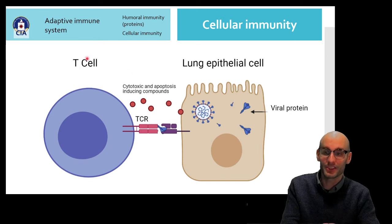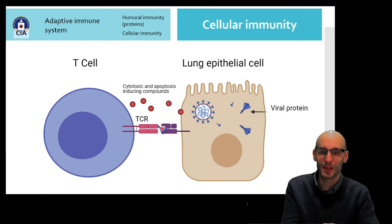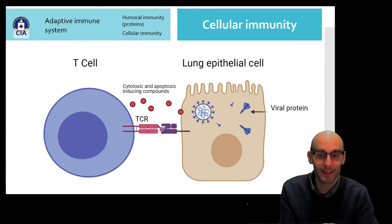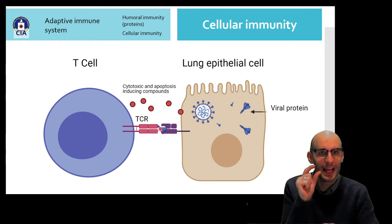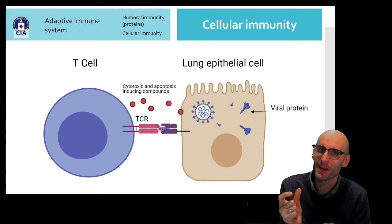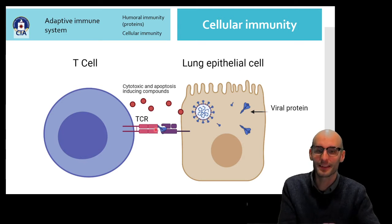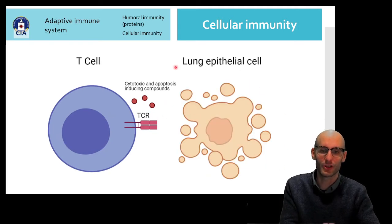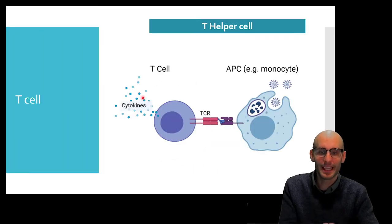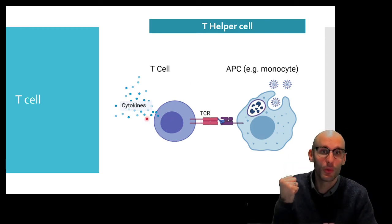Here we have a cytotoxic T cell. Lung epithelial cells have sampled their cytosol and they're displaying it. This T cell contains the one T cell receptor that could recognize this fragment of the spike protein. The spike protein is hundreds of amino acids, but the fragment they can recognize is tens of amino acids — not a lot. So it recognizes a fragment of the spike protein and releases a cytotoxic compound to induce apoptosis and death of the lung epithelial cell. Whereas the T helper cell is working with those professionals to release cytokines to coordinate the immune response.